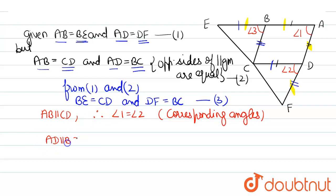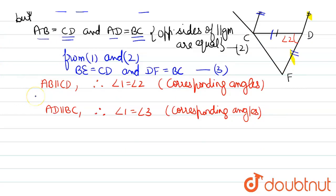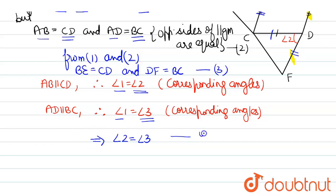AD is parallel to BC because ABCD is a parallelogram. Therefore angle 1 equals angle 3, again forming corresponding angles with transversal AE. Since angle 1 equals angle 2 and angle 1 equals angle 3, we conclude that angle 2 equals angle 3. Mark this number 4.